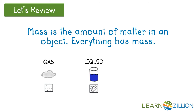Liquids like water and milk have mass. Liquids usually have more mass than gases but less mass than solids. Solids like wood and steel have mass too. Solids usually have the most mass because the particles that make up different solids are packed very tightly.